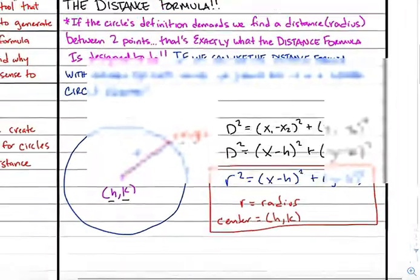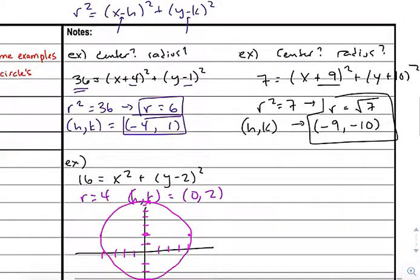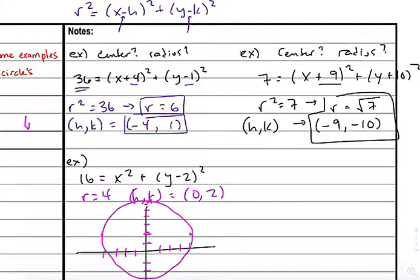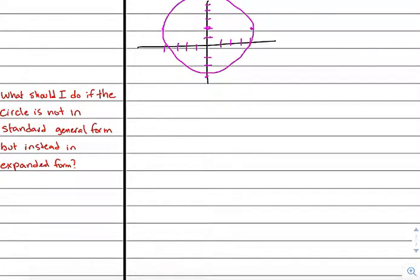Okay, so we have center at 0 comma 2 and a radius of 4. So 1, 2, 3, 4. 1, 2, 3, 4. 1, 2, 3, 4 up here. And 1, 2, 3, 4 down here. And so our circle is going to be approximately there. And so again, nothing too tough here. Just really the cognitive piece is understanding like where the formula actually comes from, which is just a generalization of the distance formula. I should say an application of the distance formula. And then that makes a very useful tool for some skills here.